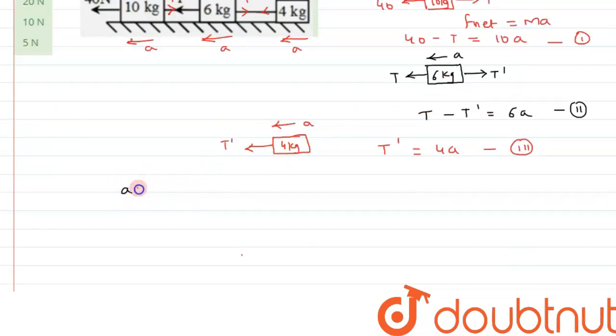So now adding equation one, two, and three, we get 40 is equals to 20a. Therefore, the value of acceleration comes out to be 2 meter per second square.